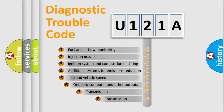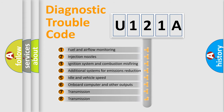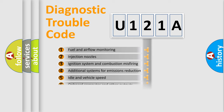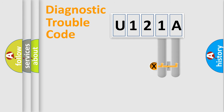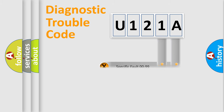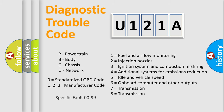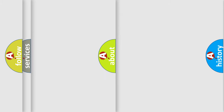The third character specifies a subset of errors. The distribution shown is valid only for the standardized DTC code. Only the last two characters define the specific fault of the group. Let's not forget that such a division is valid only if the second character code is expressed by the number zero.